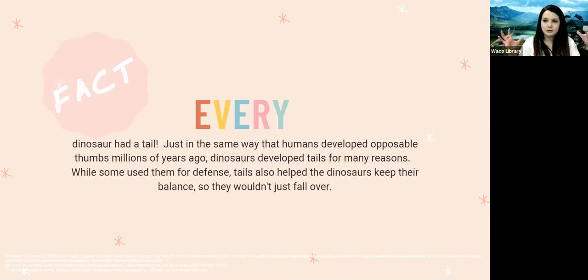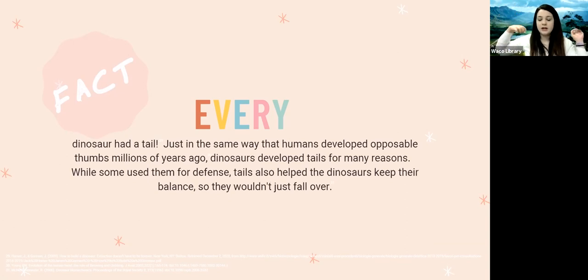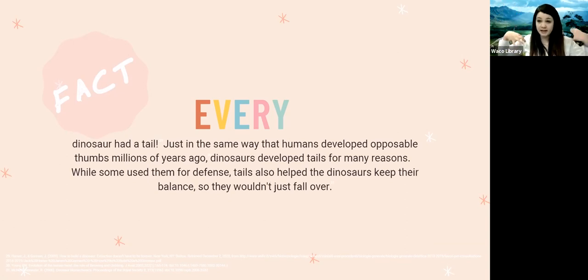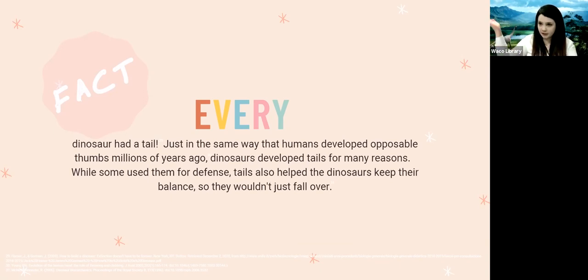Picture a Tyrannosaurus Rex — a really giant dinosaur. If he didn't have a tail, since his head was so big and heavy, he probably would have just tipped right over. So the tails helped keep them balanced.